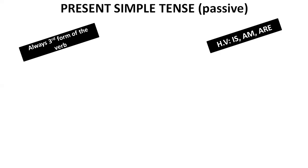On the side you can see: always use the third form of the verb. Keep this in mind — whatever passive tense it is, whether present simple, past simple, future simple, or present continuous — in passive we will always use the third form of the verb. We don't need to think about using the first form, second form, or anything else. We have to always use the third form of the verb.